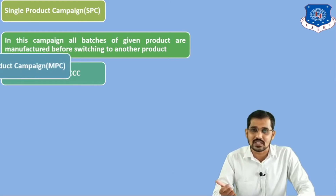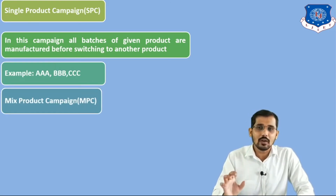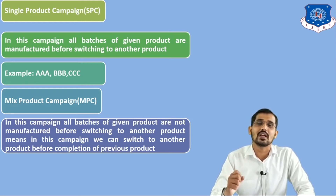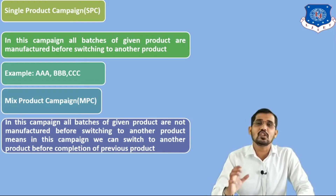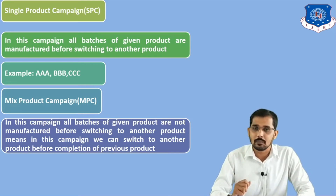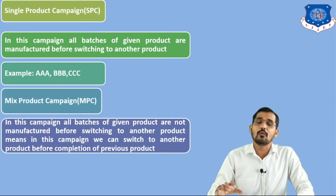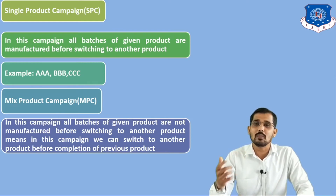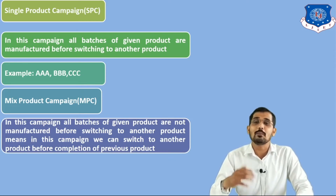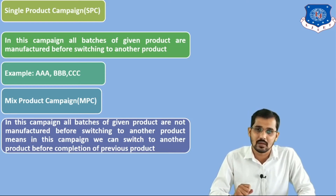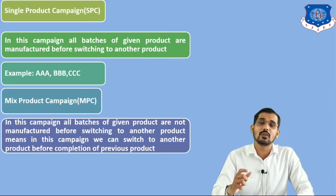That is not similar to MPC — that is the mixed product campaign. In this campaign, all batches of a given product are not manufactured before switching to another product. Means in this campaign we can switch to another product before completion of the previous product. Suppose we are producing component A, but we have a good sequence to produce B, then we can go for B. We are not restricted to completing all batches of component A first, as we do in the single product campaign.